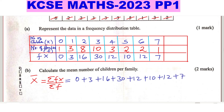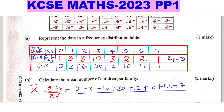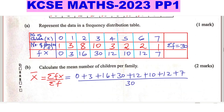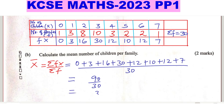We divide by the summation of frequency. Since we are already given that there are 30 families, we divide by 30. Adding everything: 0+3+16+30+12+10+12+7 gives 90. Then 90 divided by 30 equals 3. So the mean number of children per family is 3.